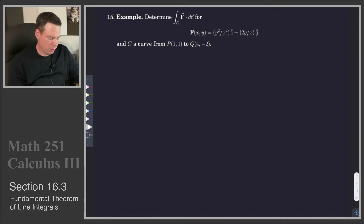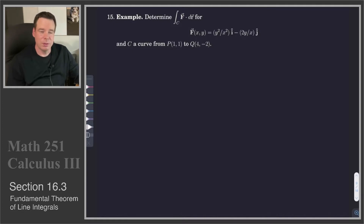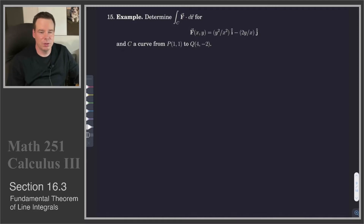In this example we want to determine the line integral for this vector field, where C is a curve from (1,1) to (4,-2). Since the curve isn't given to us in a parametrized form — just an initial point and terminal point — this is an indication that the integral is probably independent of the curve we choose. And if that's the case, this means it's probably a conservative vector field.